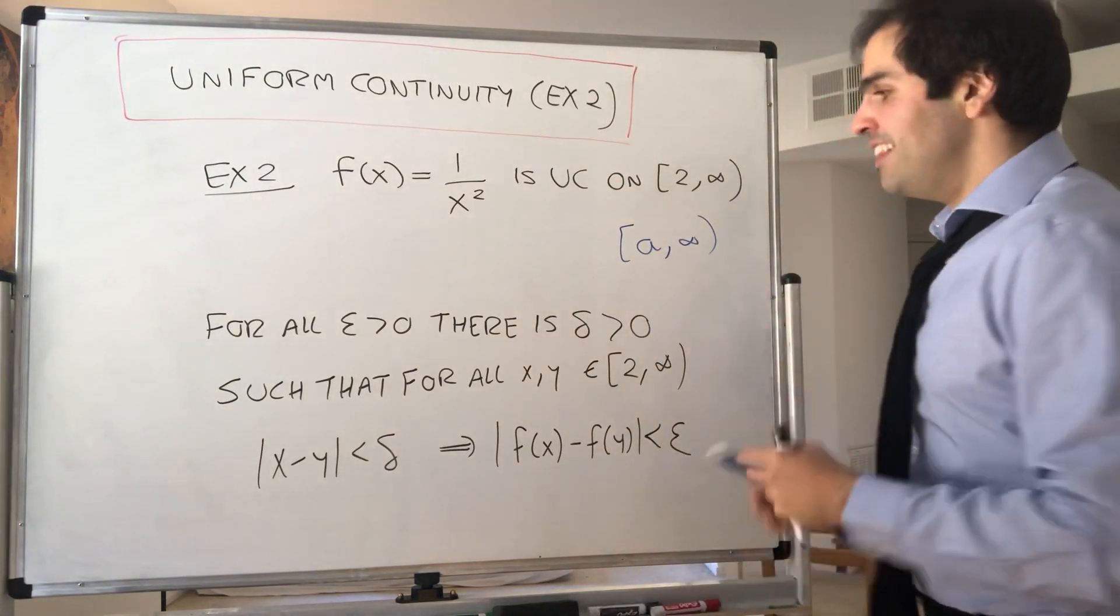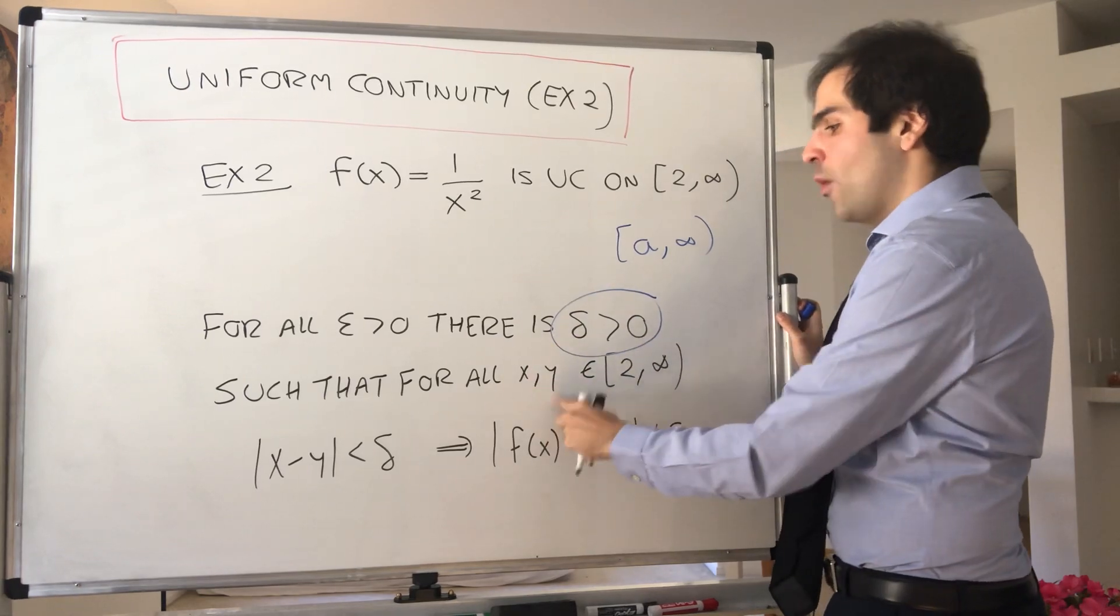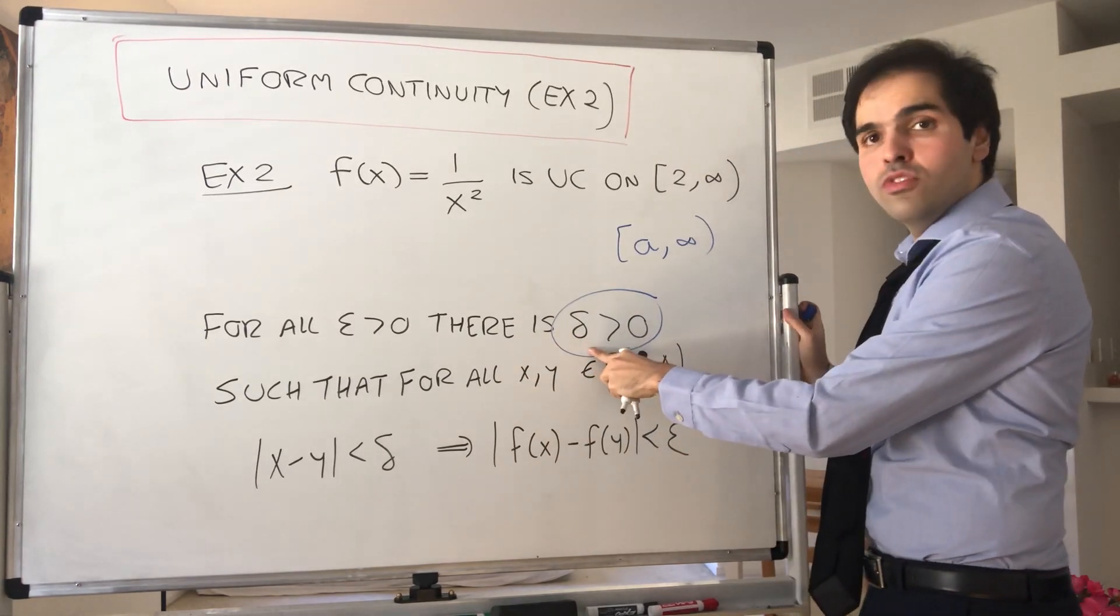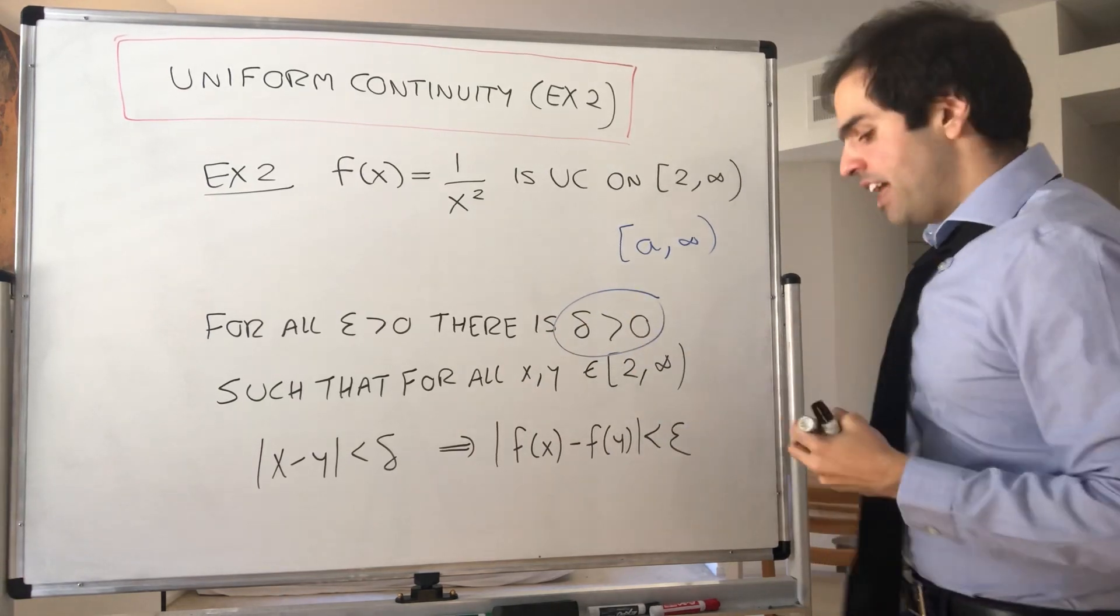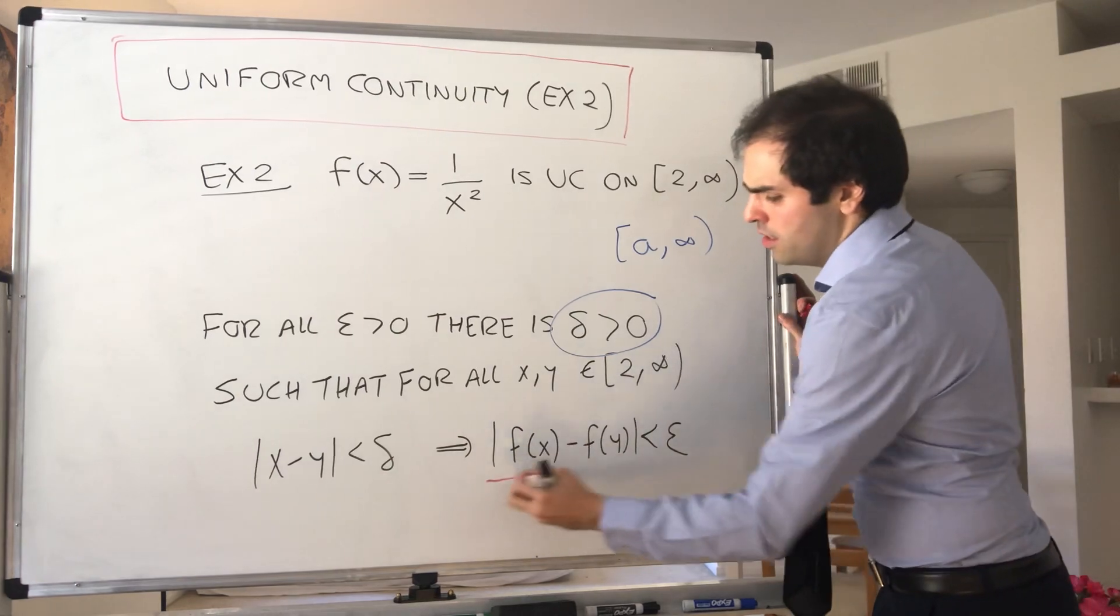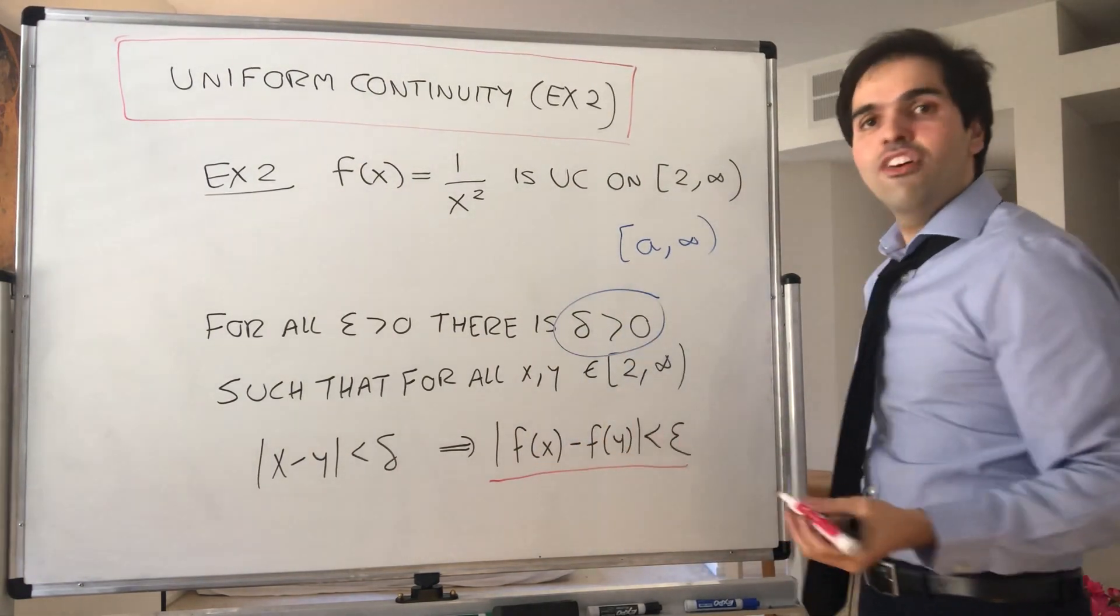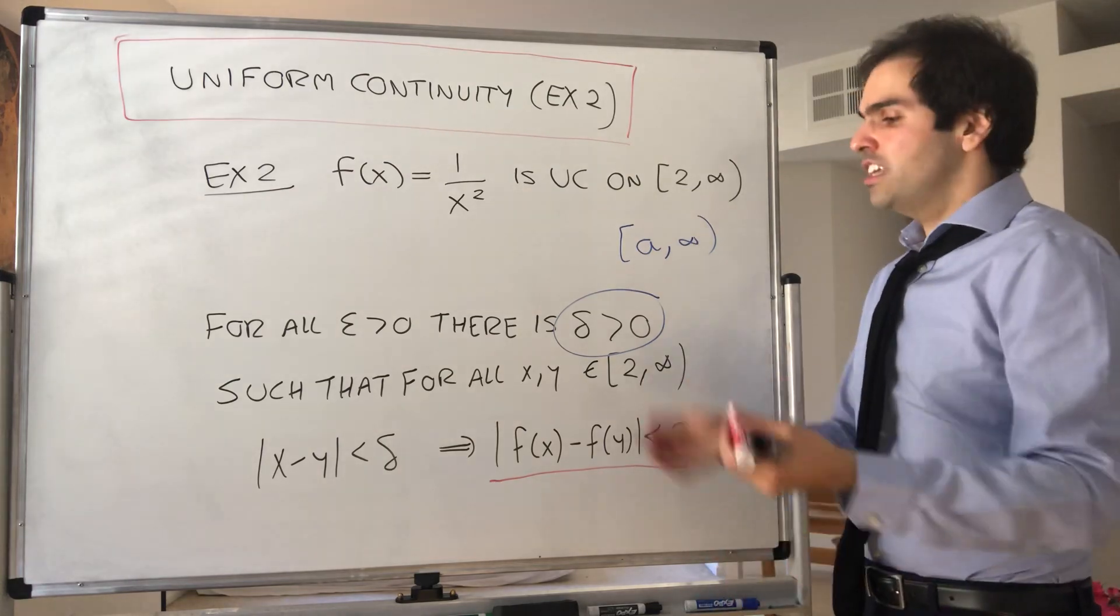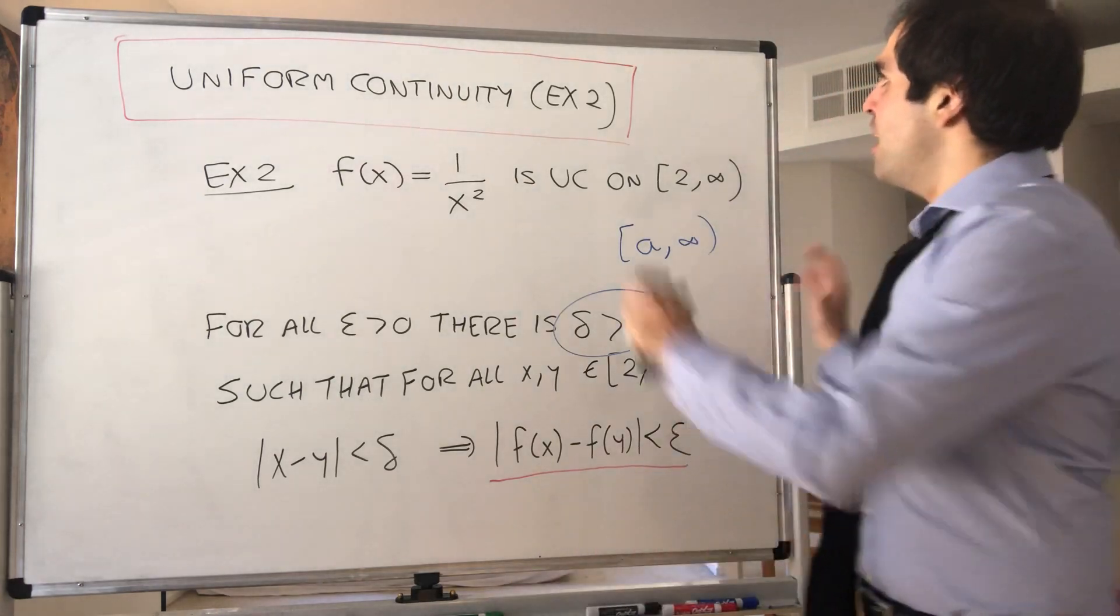The main thing is the delta cannot depend on x and y. There has to be a universal delta that works for all the x and y's. That said, as I said in a previous video, the strategy is the same as continuity. Calculate f of x minus f of y and try to fish out x minus y from that. So let's do that.